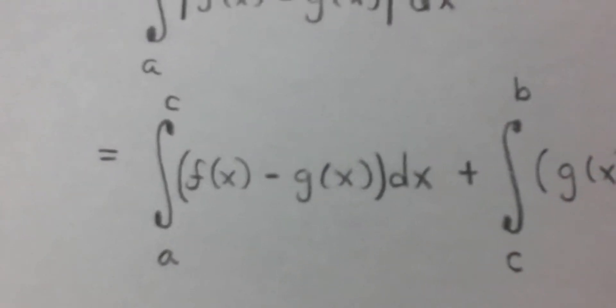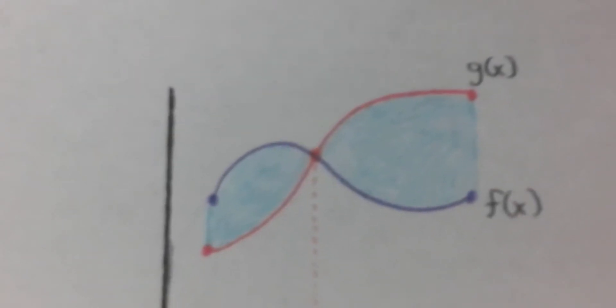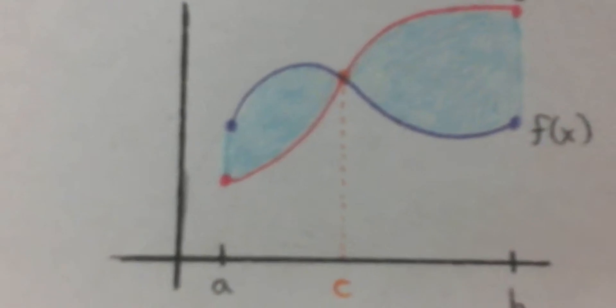First, calculate the integral from a to c of f of x minus g of x. So f here is above the curve g on the interval from a to c.